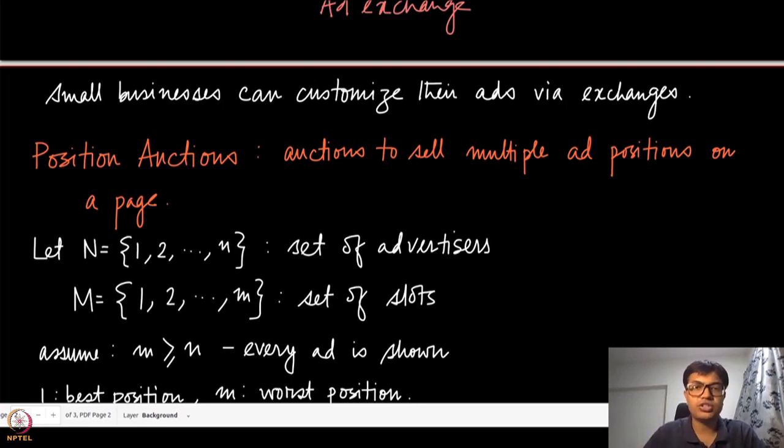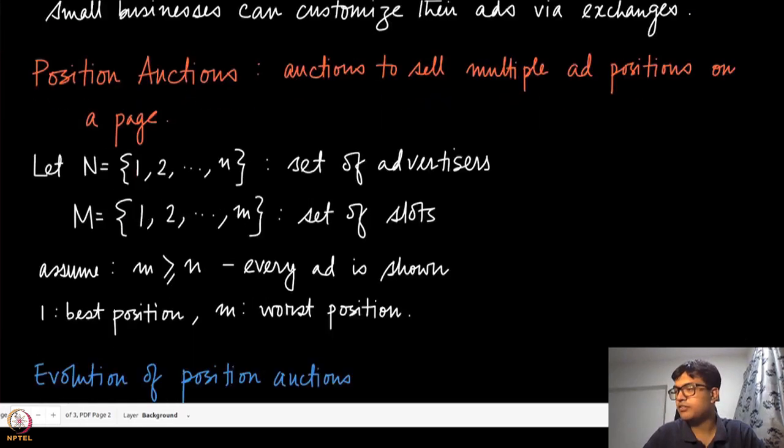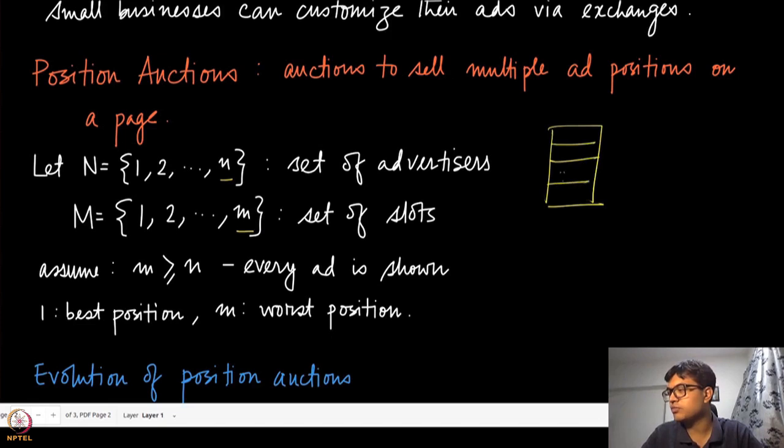Let us look at position auctions, where the objective is to sell multiple ad positions on a page. Assume that there are N set of advertisers and M slots in the advertisement. There are M slots starting from 1 to M, and N advertisers who want to show their ads in one of these positions. We assume there are sufficient number of slots. Position one is the best possible position and M is the worst position. Everybody wants to show their ads at a higher level.